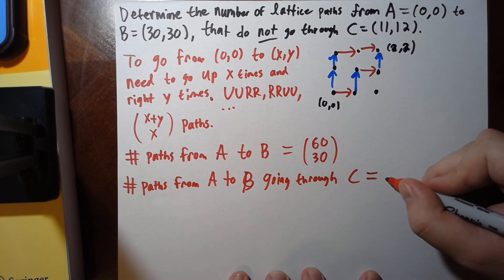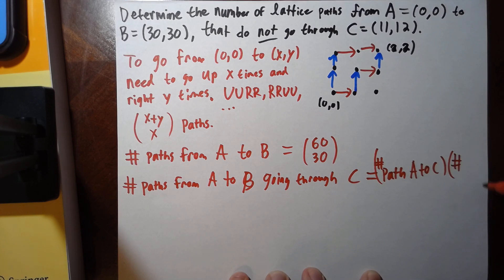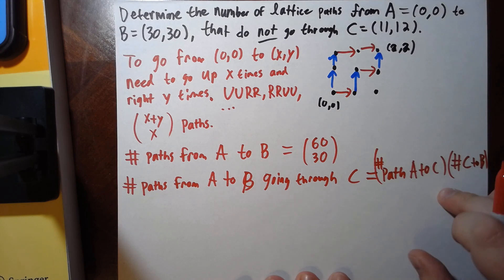And the idea here is this is going to equal the number of paths from A to C times the number of paths from C to B. Because if you have a different path—since you have to go through C, you have to get to C somehow by a lattice path, and then you have to go from C to B.